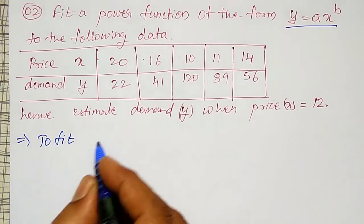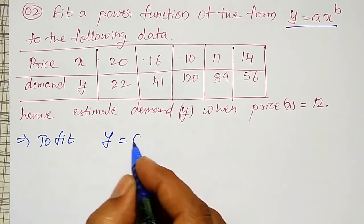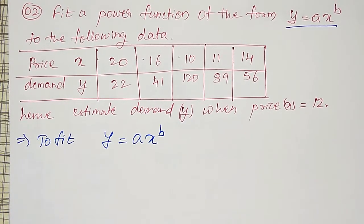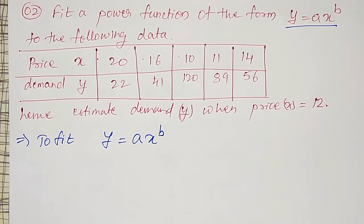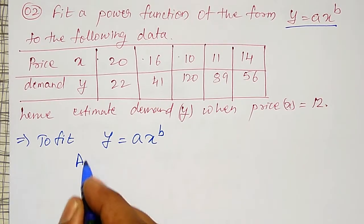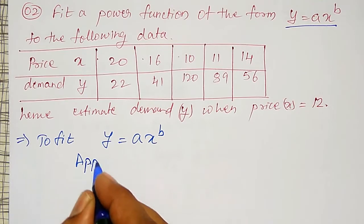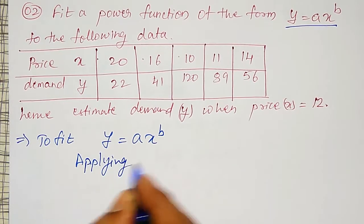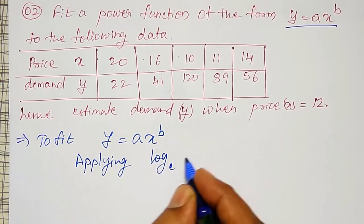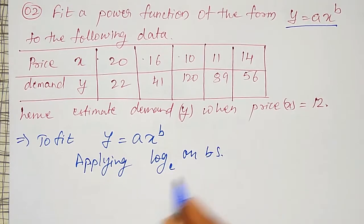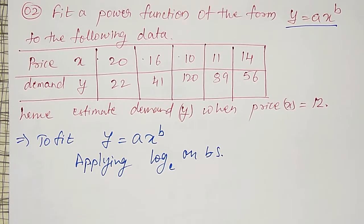To fit y equal to ax raised to b, we don't have such normal equations directly. But I can convert this into a straight line form by applying log on both sides. I am applying log to the base e — you can use log to the base 10 also, but I am preferring log to the base e here.